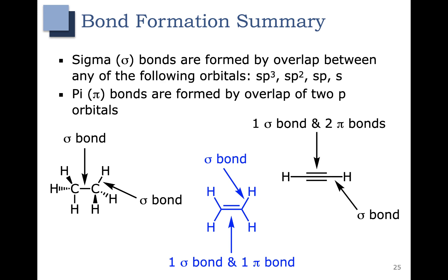In the last example, we have a triple bond. The triple bond contains one sigma bond and two pi bonds. The sigma bond is formed by the overlap of two sp orbitals, and each of the pi bonds is formed by the overlap of two p orbitals.